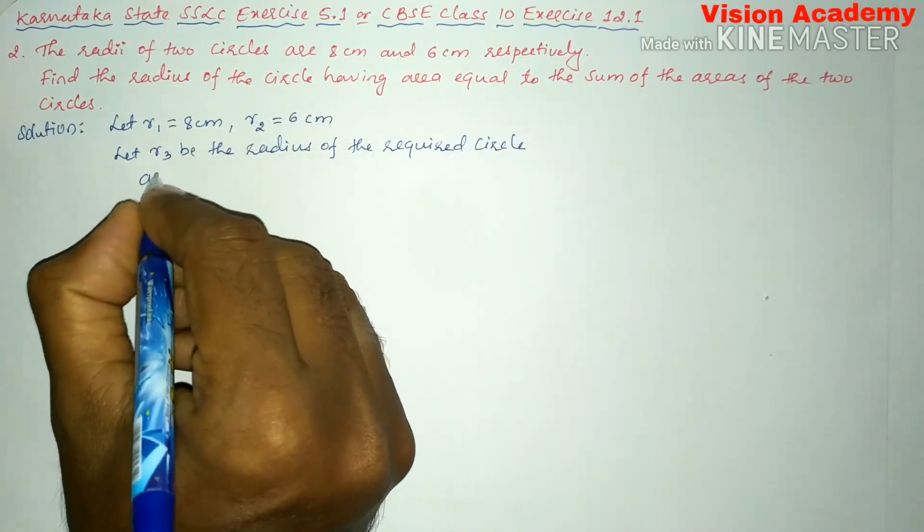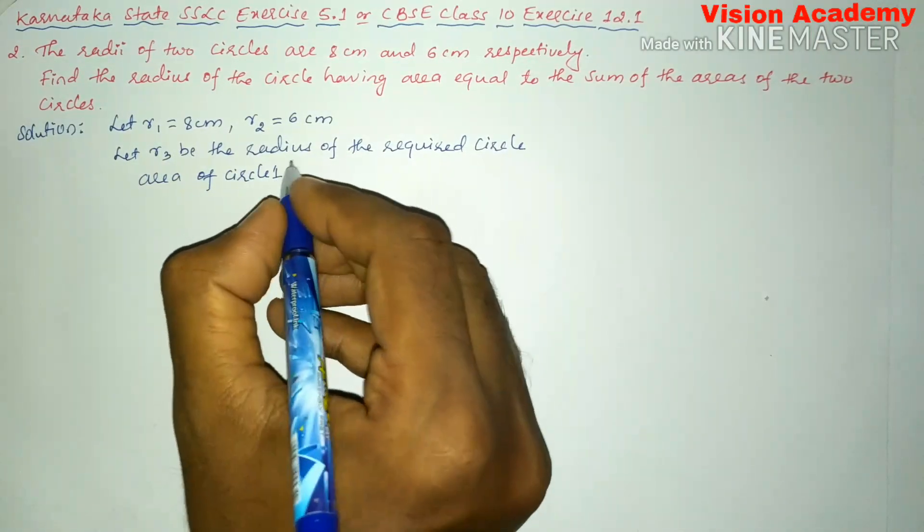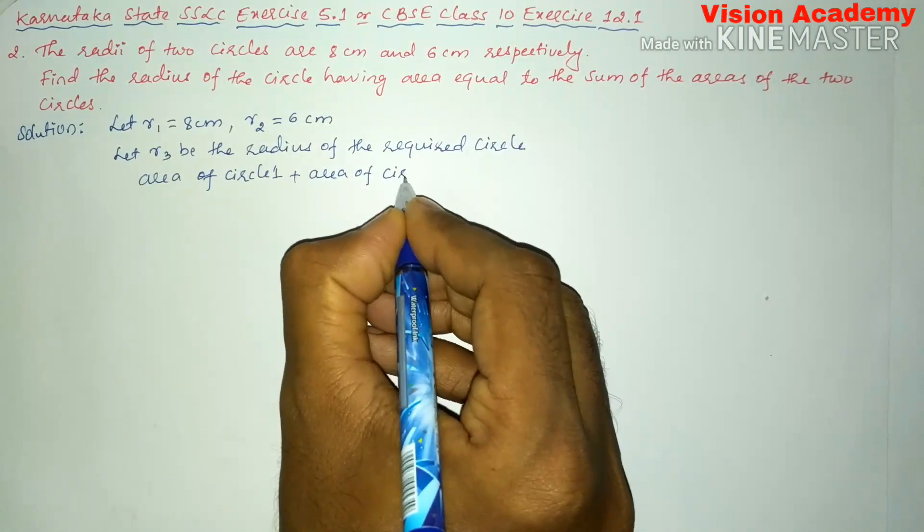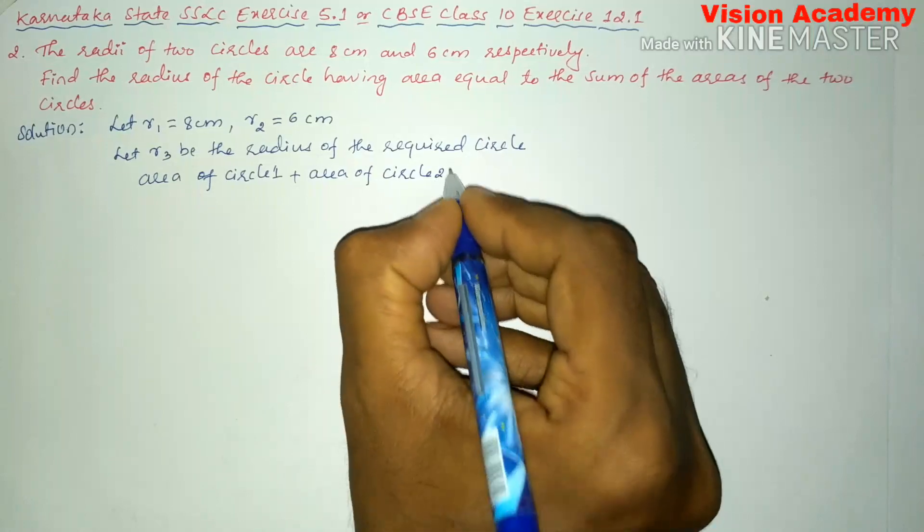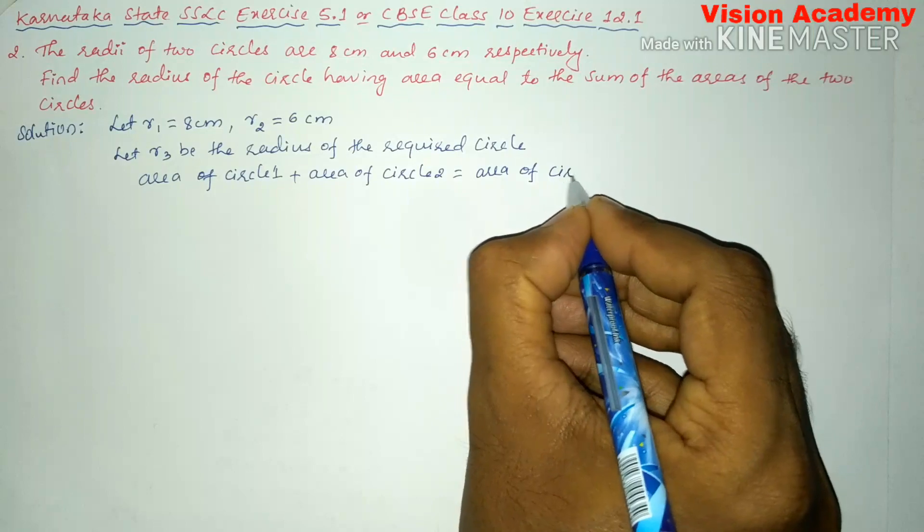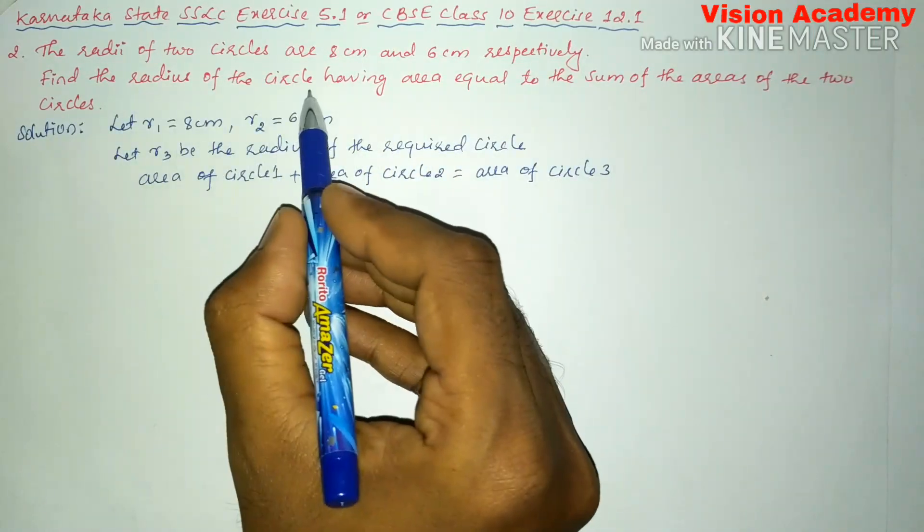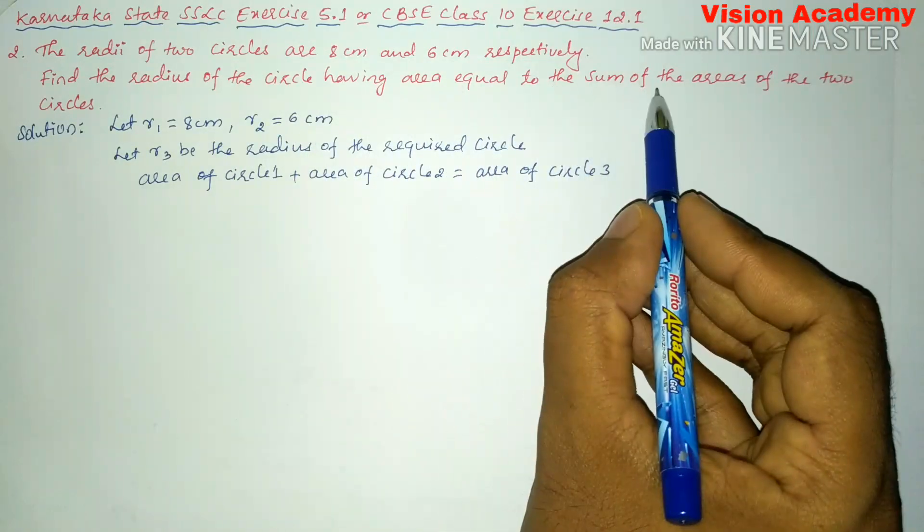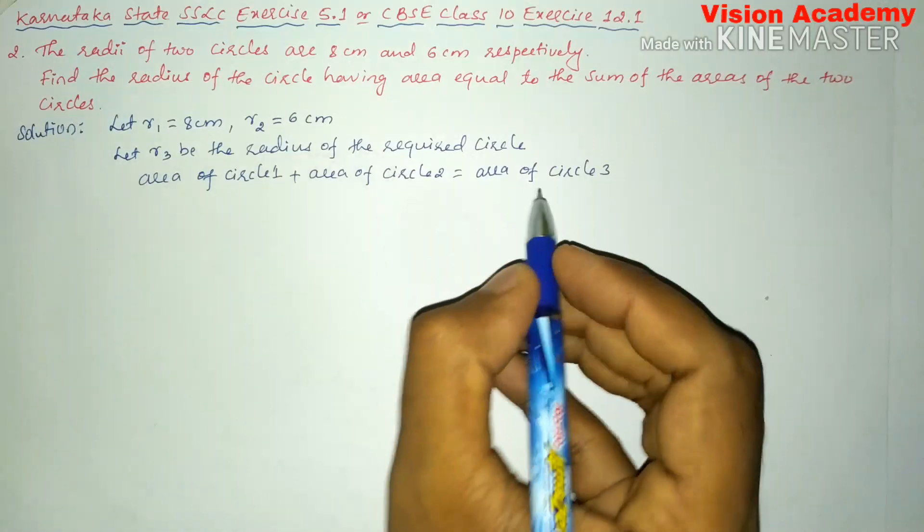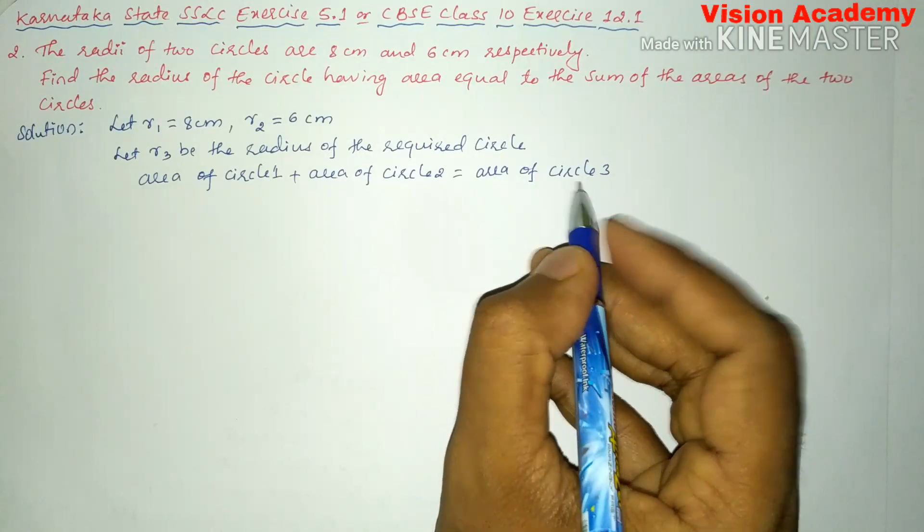Area of circle 1 plus area of circle 2 is equal to area of circle 3, because it is already given in the question. The radius of the circle having area equal to the sum of the areas of two circles.